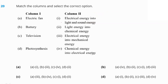Match the column: an electric fan converts electric energy into mechanical energy (A matches 3). A battery converts chemical energy into electric energy (B matches 4). A television converts electric energy into light and sound energy (C matches 1). Photosynthesis converts light energy into chemical energy (D matches 2). Option C — A3, B4, C1, D2 — is our right answer.